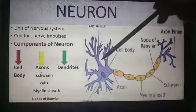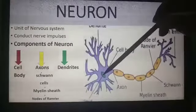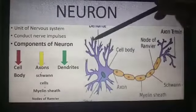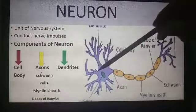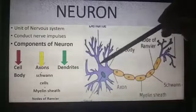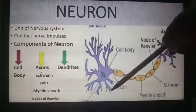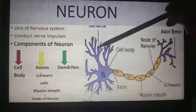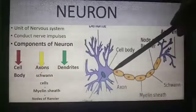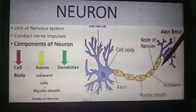This structure is called the cell body. The cell body consists of a nucleus and cytoplasm. The processes which arise from the cell body and conduct impulses towards the cell body are called dendrites.